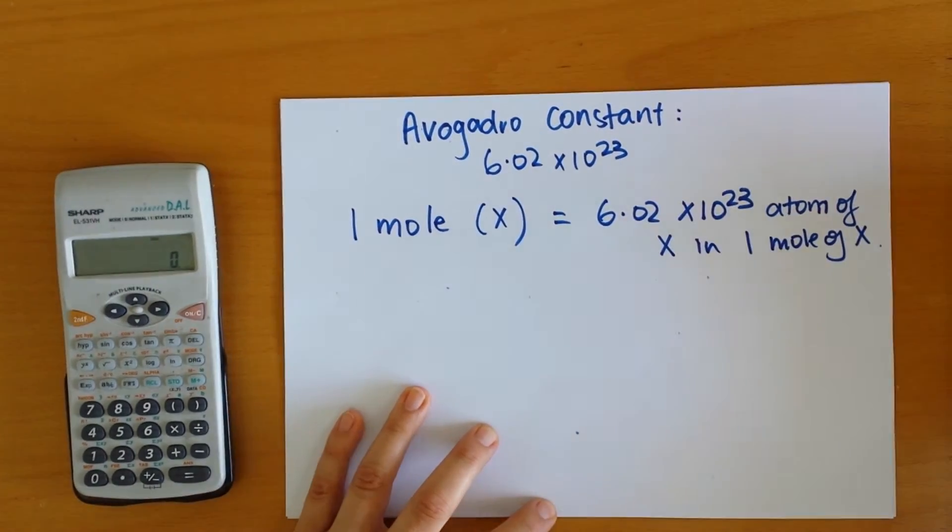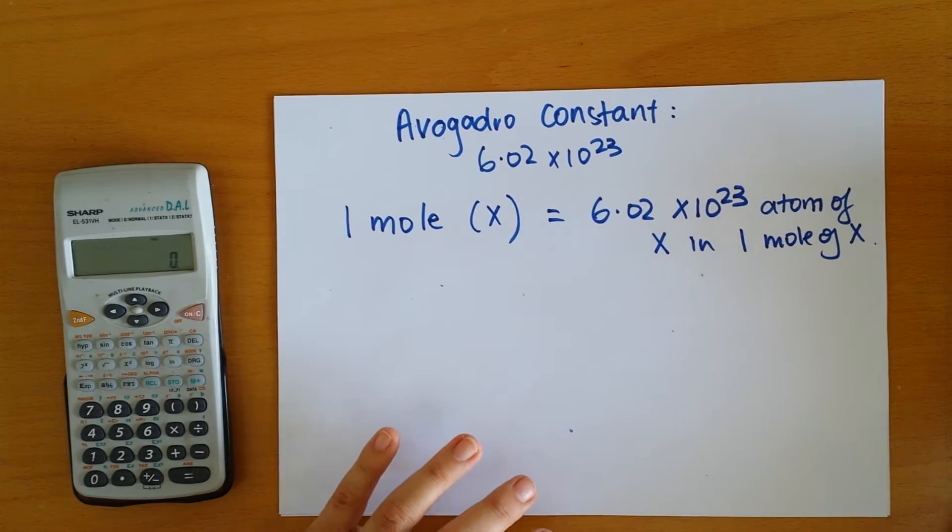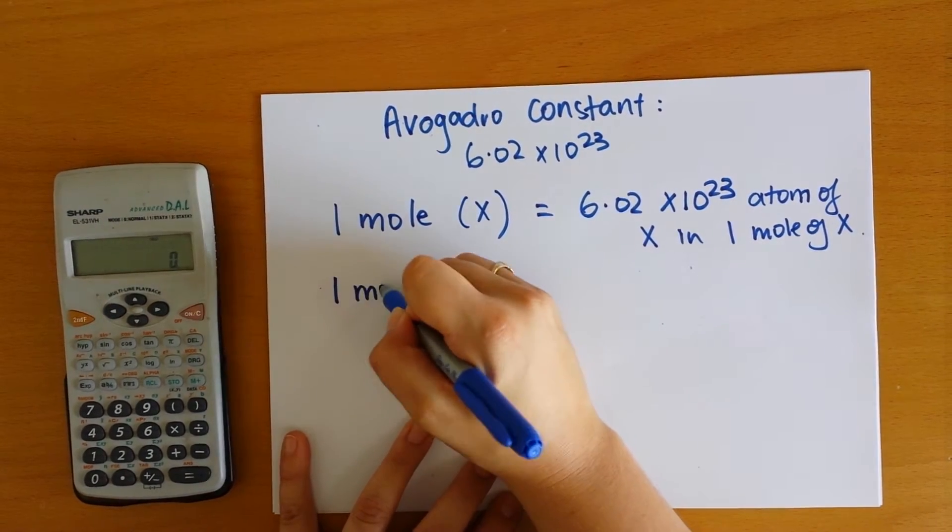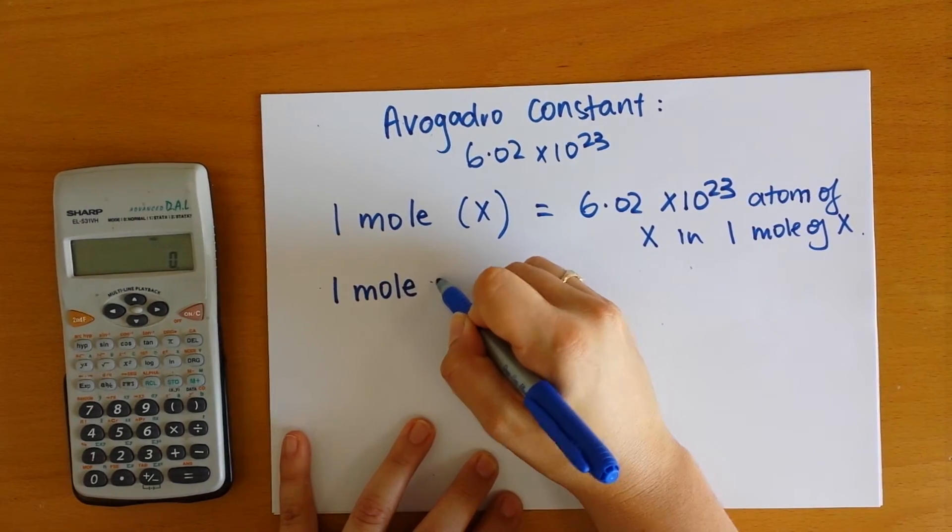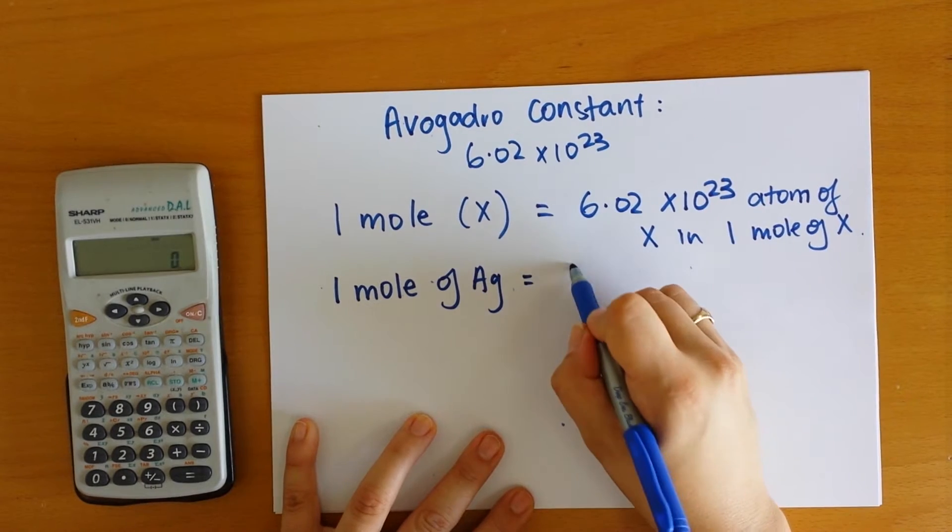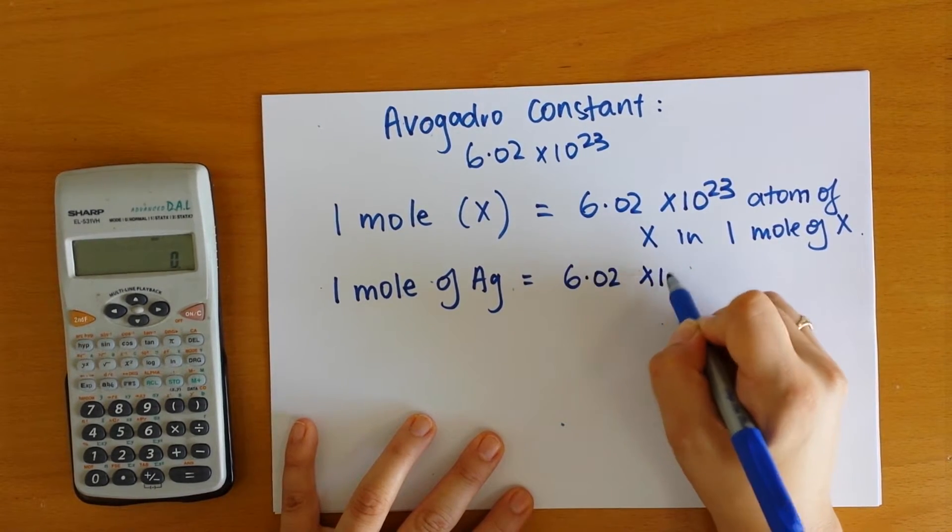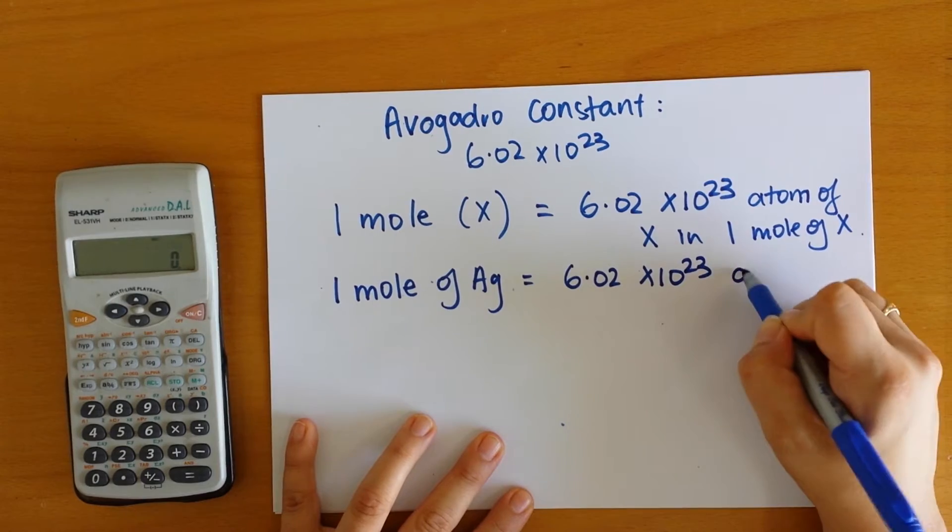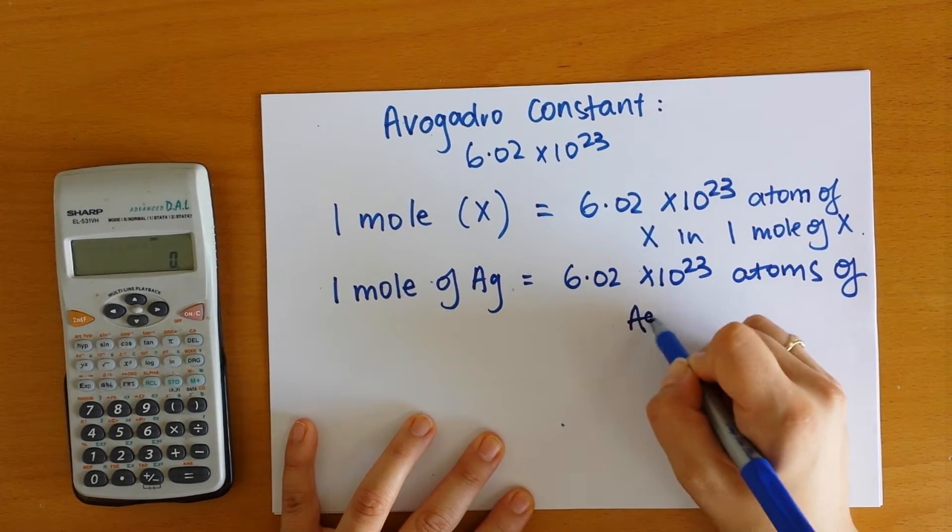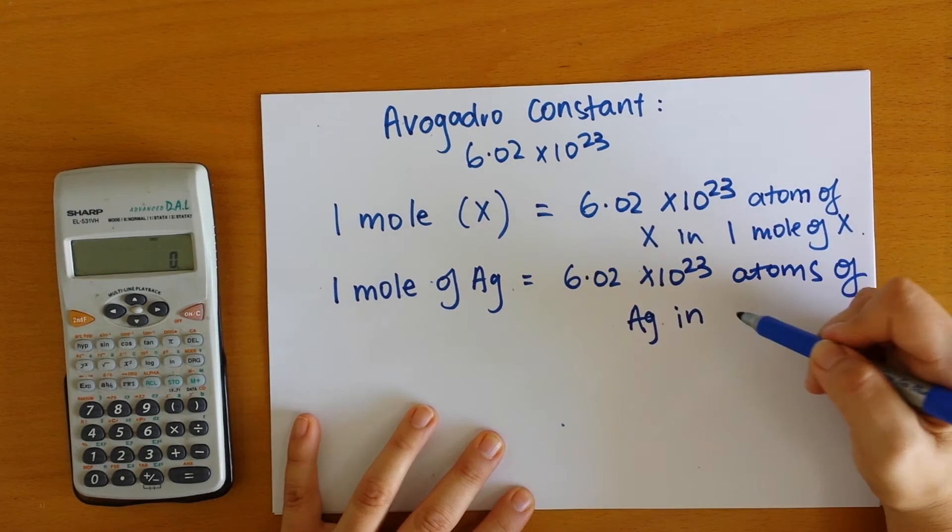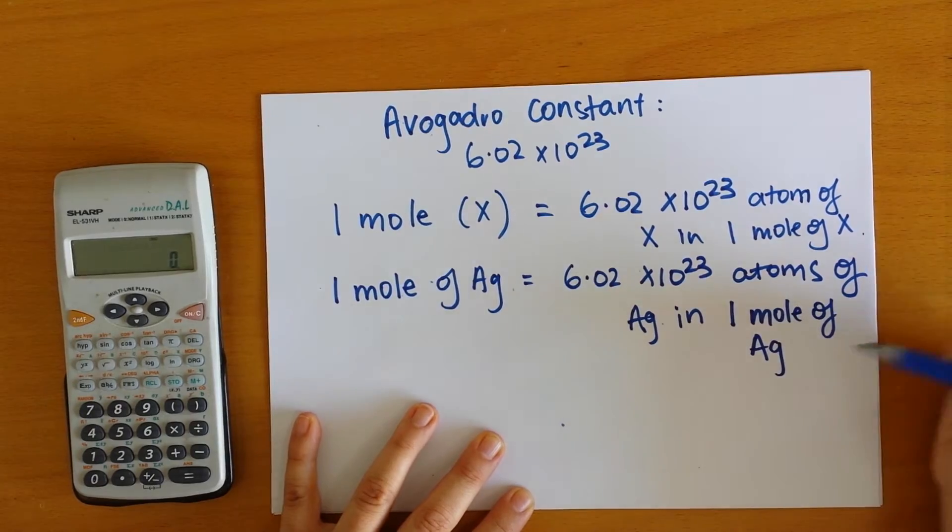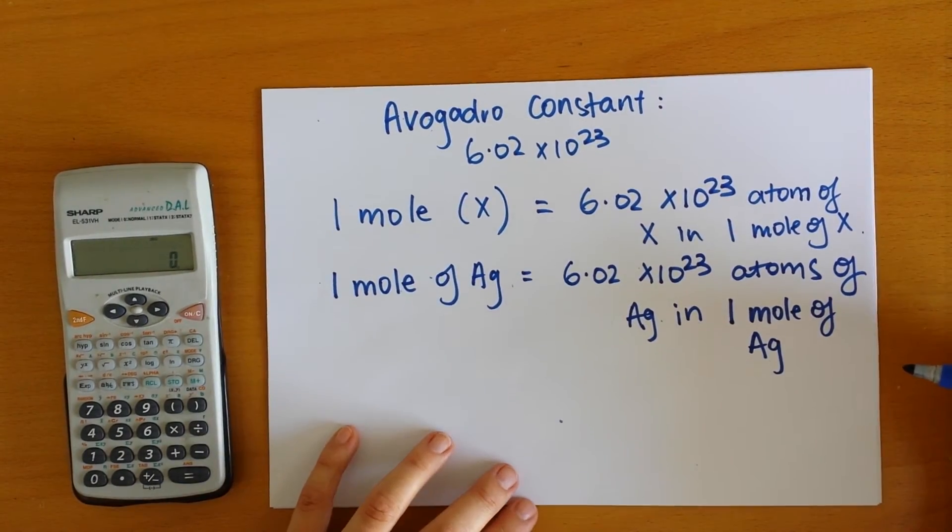Now this might make a bit more sense when we actually start talking about particular types of compounds. So let's look at something like silver. So if we have one mole of silver, what that means is we have 6.02 times 10 to the 23 atoms of silver in one mole of silver. So this is an important definition.